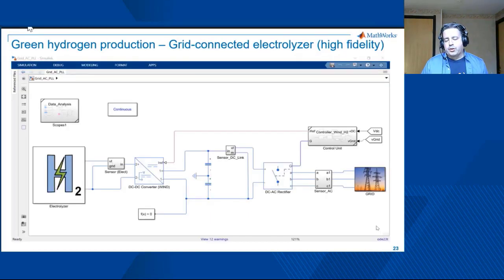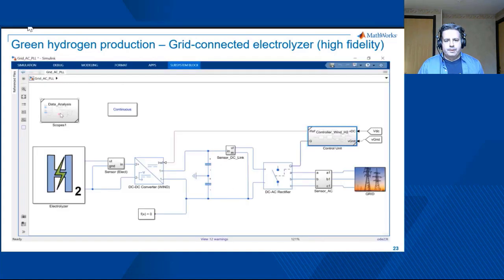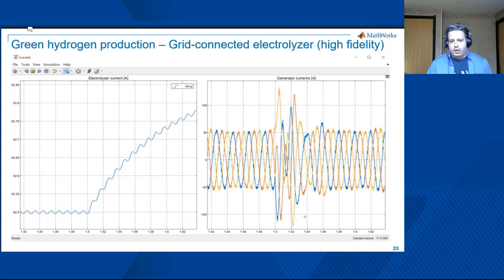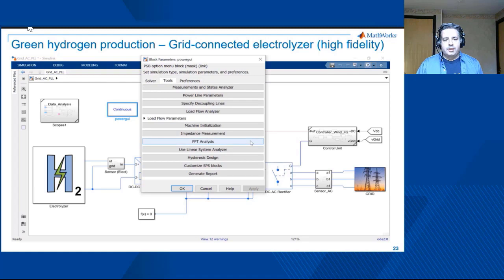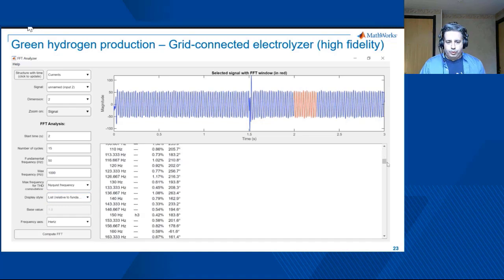Now let's look at the second case, where the electrolyzer is not standalone but connected to the grid. Here we are interested in seeing how the electrolyzer reacts to a change of frequency in the grid, using a phase-locked loop that detects the frequency and uses it for control purposes. A transient is observed in the generator currents, and the amplitude and duration of that transient should be limited if the controller is doing a good job. Simscape Electrical gives you the possibility to do harmonic or FFT analysis — in this case, harmonic analysis of a current 15 cycles after the transient. Results can be given as a bar diagram or as a list of numerical values, and those can be exported through MATLAB to any other environment like Excel.